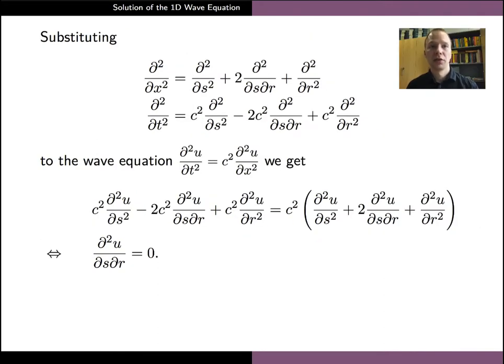If we replace the derivatives with respect to x and t in the wave equation with these expressions, we arrive at the first equation on the slide. The second order terms depending only on s and r on both sides of the equation are equal and therefore cancel each other. This way the equation simplifies greatly into the form which requires that the mixed derivative of u with respect to s and r should be zero.